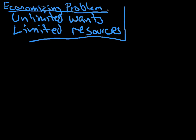Okay, this is the second blackboard discussion on the production possibilities model. Remember we started here with unlimited wants and limited resources. This is the big problem economists look at.